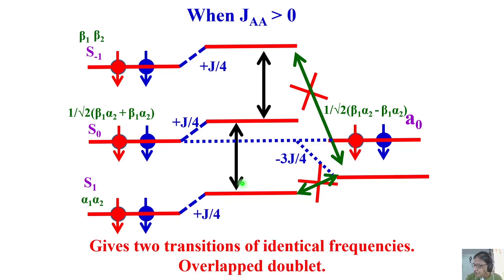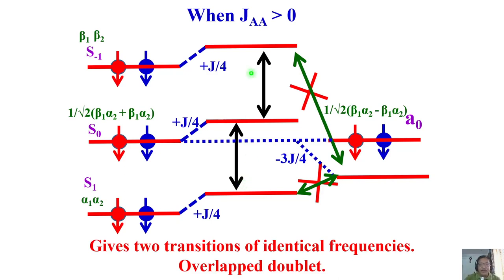The conclusion for the A2 spin system: whether J coupling is present or not does not matter — you always get a single peak. Though there are two allowed transitions, they overlap and give rise to a single frequency. Compare this to the AX spin system which gives four lines, and the AB system which also gives four lines. In A2, symmetric-to-antisymmetric transitions are not allowed, and the two symmetric transitions are degenerate, so the resultant spectrum is always a single peak.